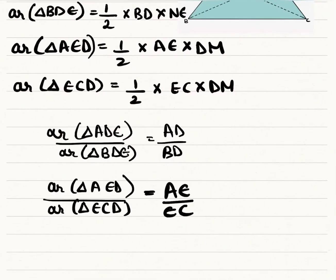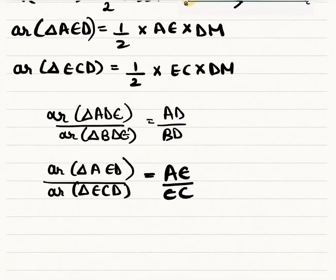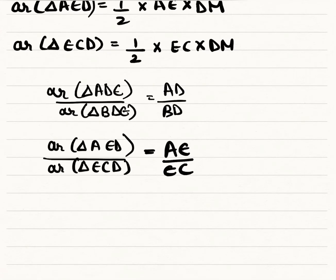Now let us look at the figure. The pink triangle, that is triangle ADE, is the same as triangle AED. And at the bottom, triangles BDE and ECD are on the same base DE, and DE is parallel to BC. So triangles on the same base and between the same parallels are equal in area.